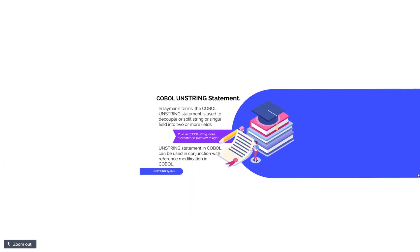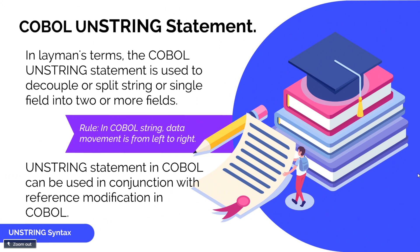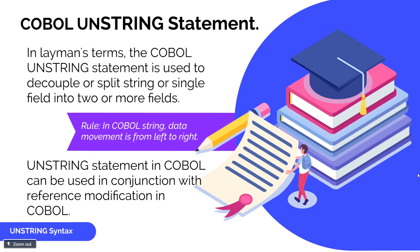Let's look at the definition of the unstring statement. In layman's terms, the COBOL Unstring Statement is used to decouple or split a string from a single field into multiple fields. You can use the unstring function any number of times in your COBOL program, and you can also use it in conjunction with other COBOL functions, for example, reference modification.